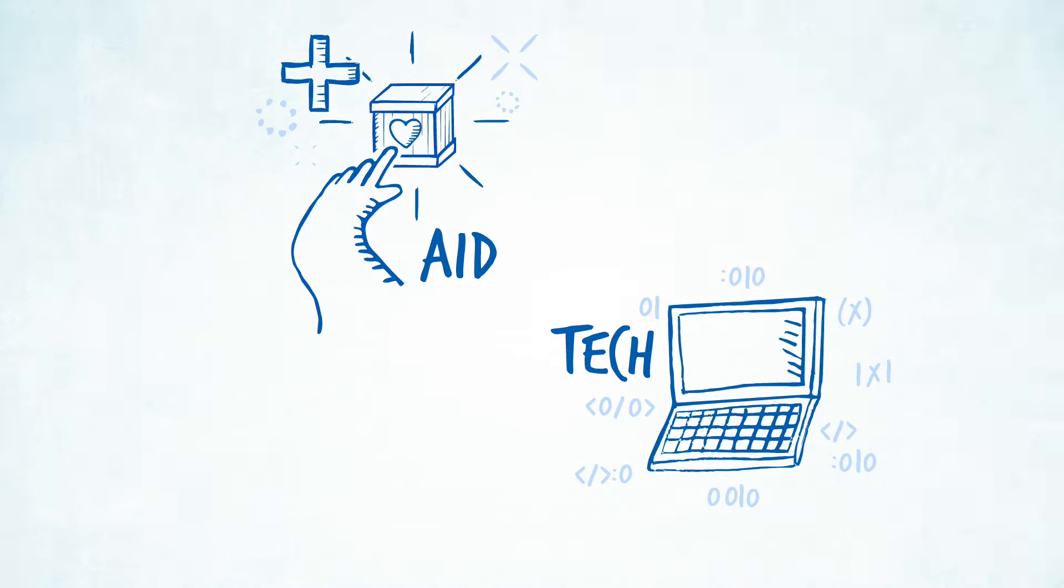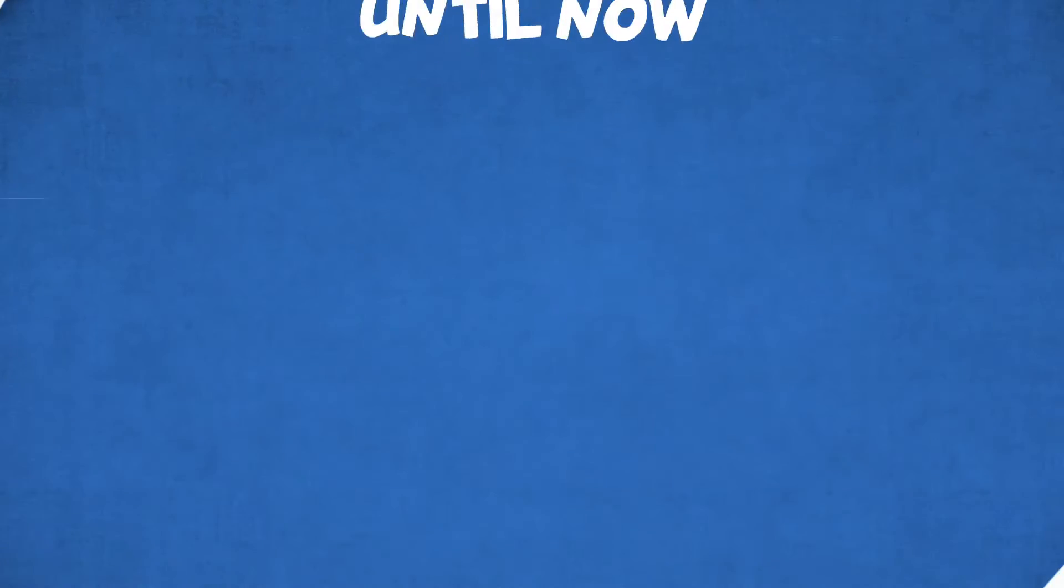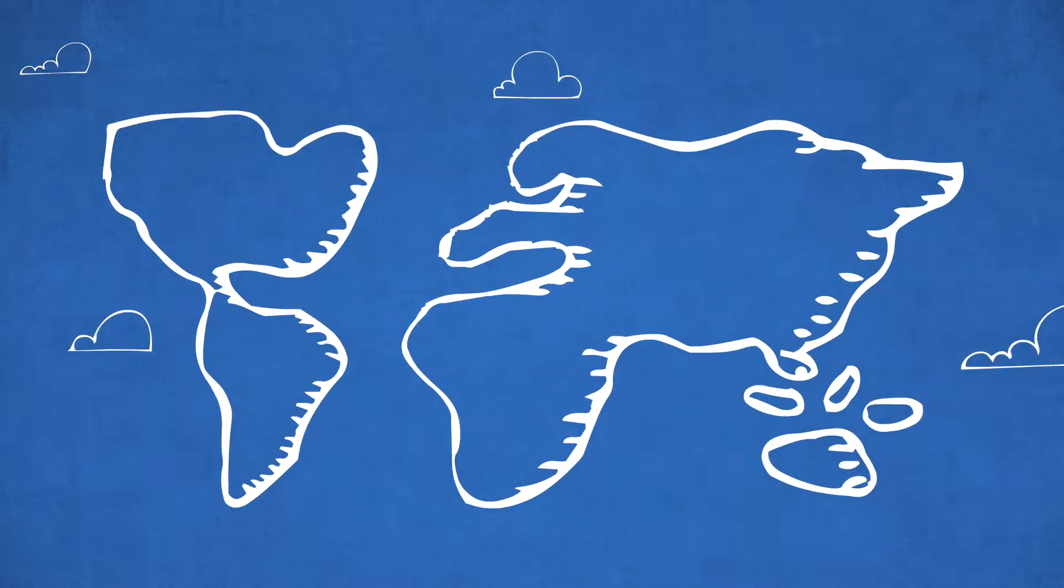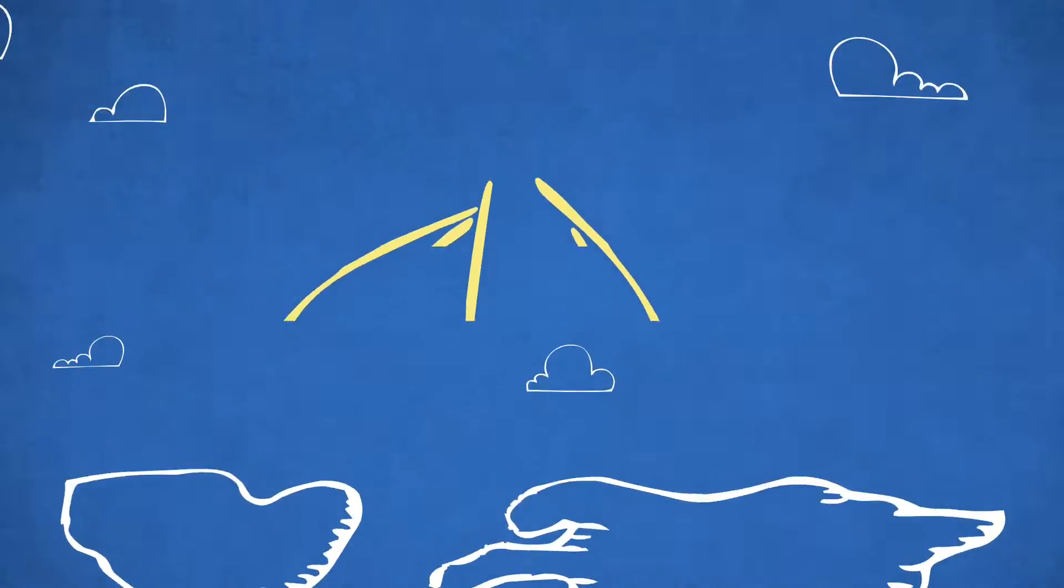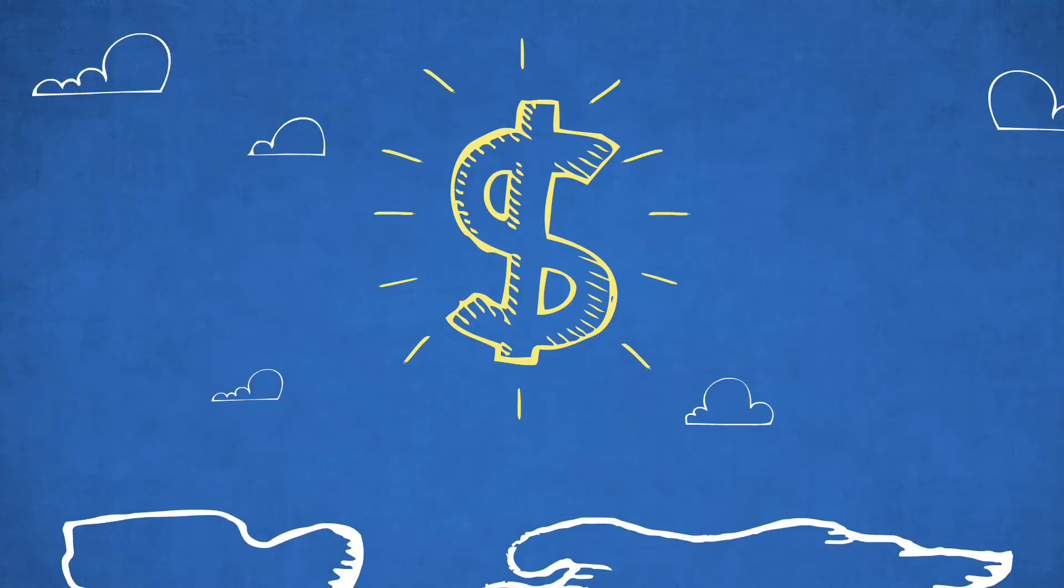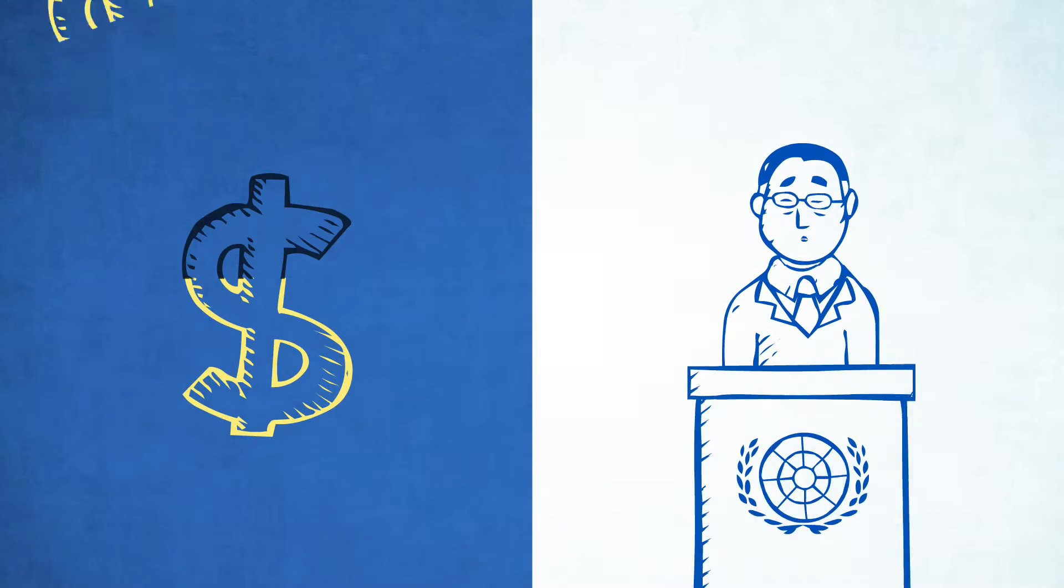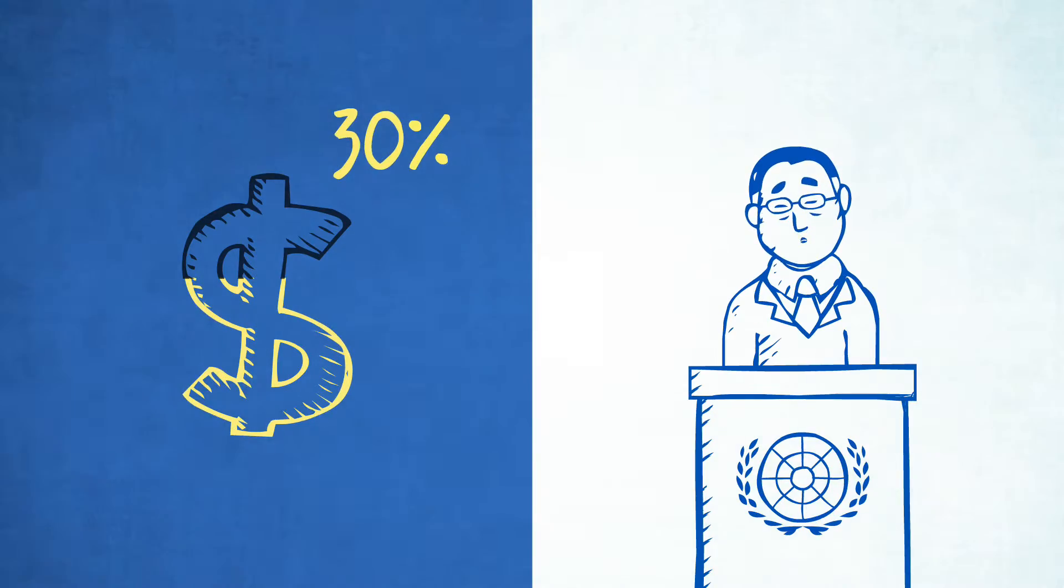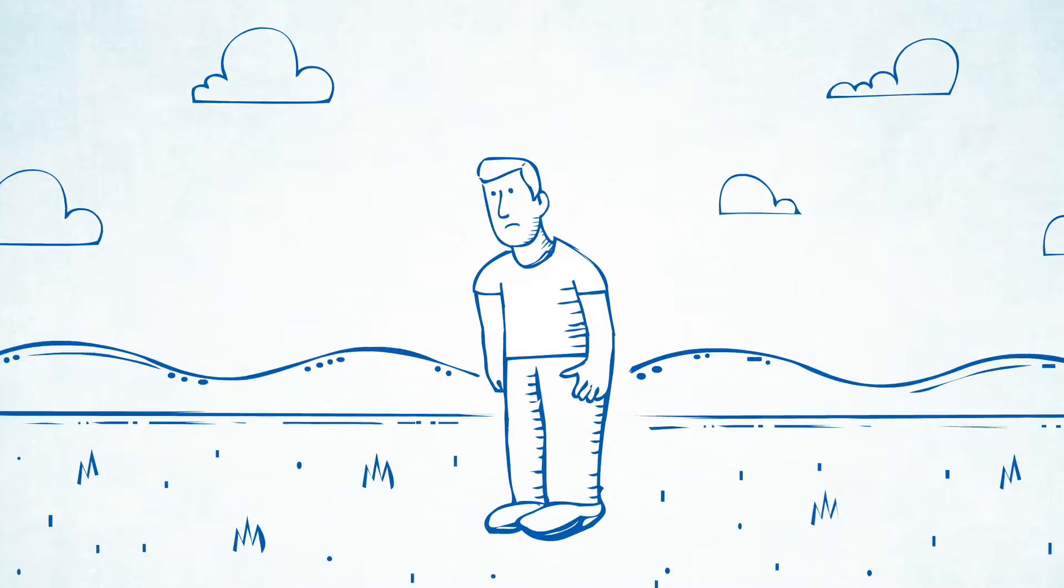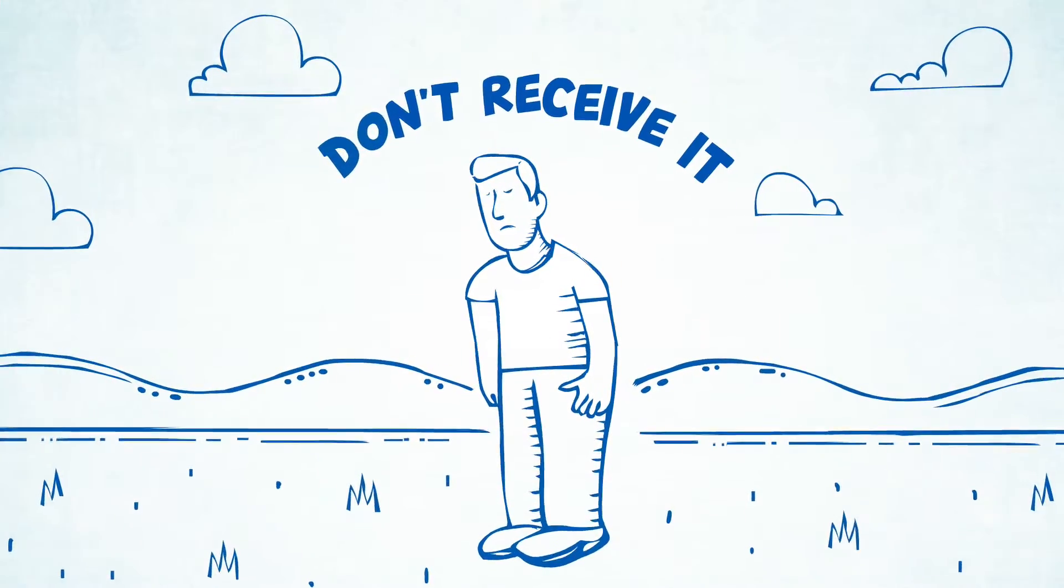Aid and technology normally don't go hand in hand, until now. Every year the richest countries in the world donate more than $100 billion in foreign aid. Secretary-General of the UN Ban Ki-moon says that 30% of this money is lost to corruption and fraud. This means that the people who need aid most don't receive it.